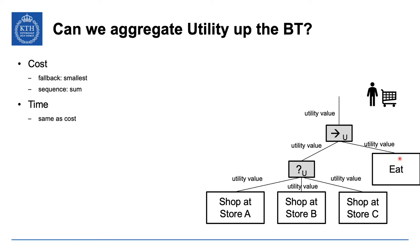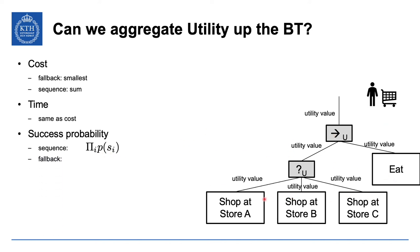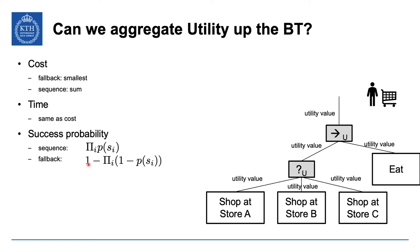For success probability, we can also do a rational computation. For a sequence, we need to succeed at both steps, so the probability of succeeding with the whole sequence is the product of those probabilities. For a fallback, it's enough to succeed at one — so we want to avoid failing all three. The probability of failing all three is the product of (1 minus success probability) for each, and one minus that product gives the probability of succeeding at least once.